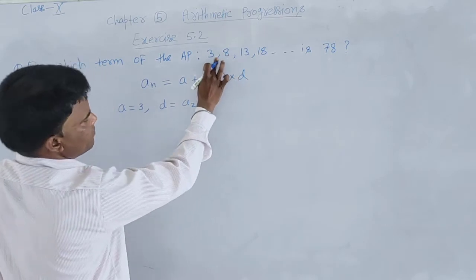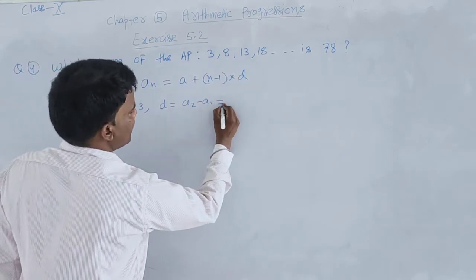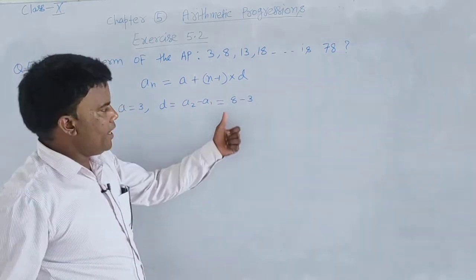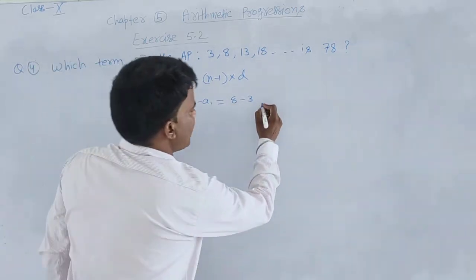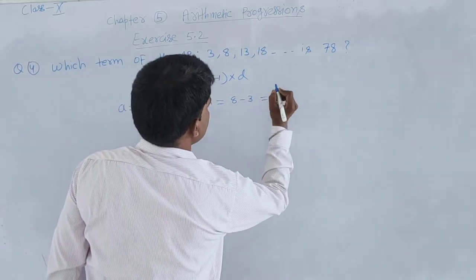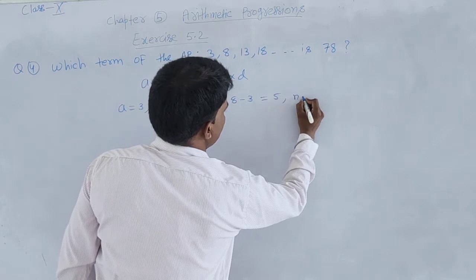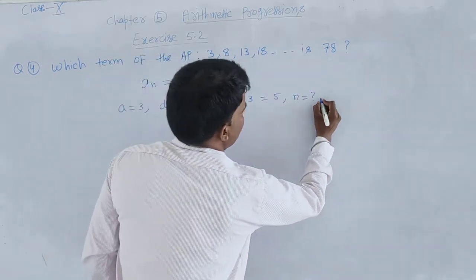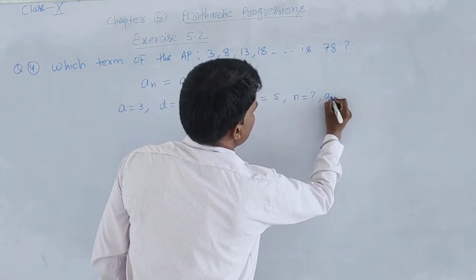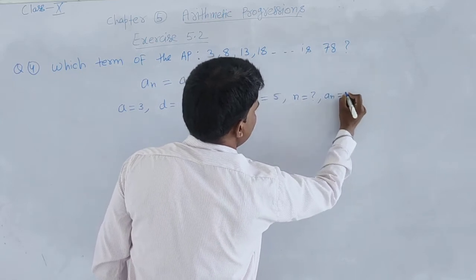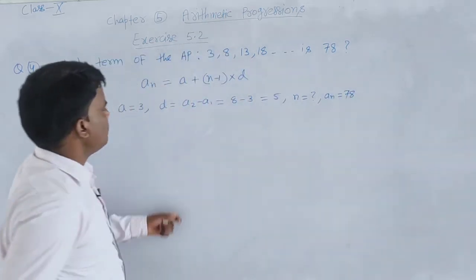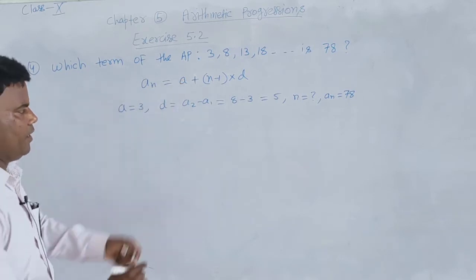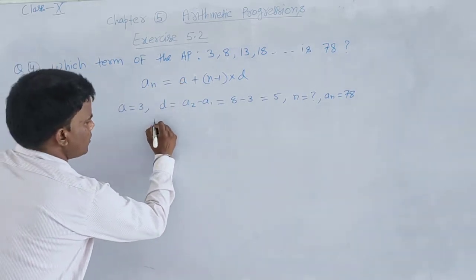To find the common difference, we use the formula d = a2 minus a1, meaning we subtract the first term from the second term. So 8 minus 3 equals 5. The value of n is what we need to find, and the nth term of the given AP is 78. Now we will put the values into the formula.